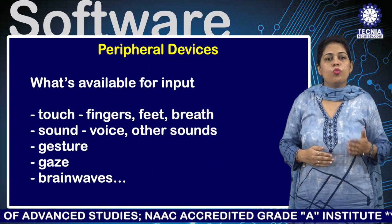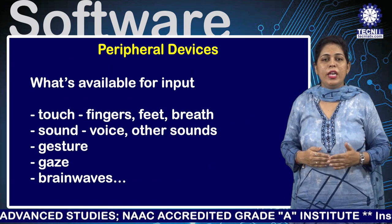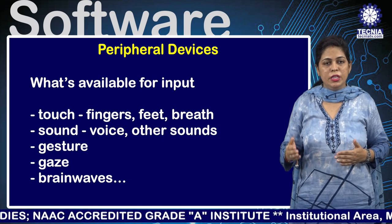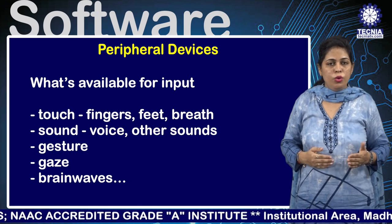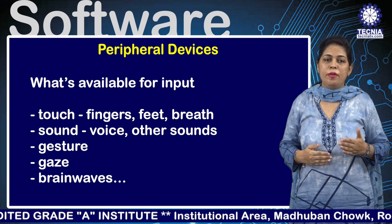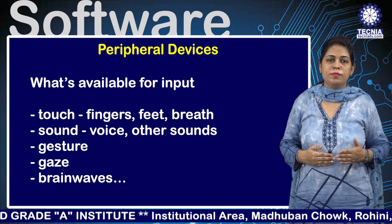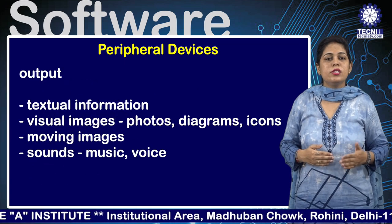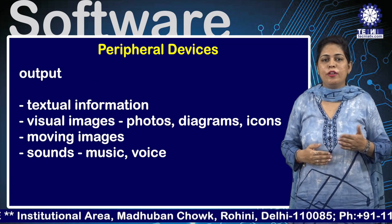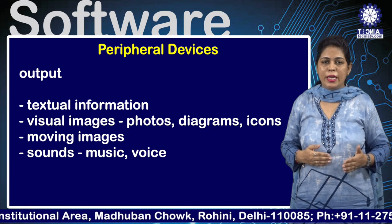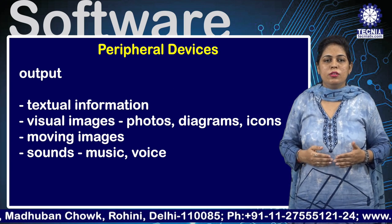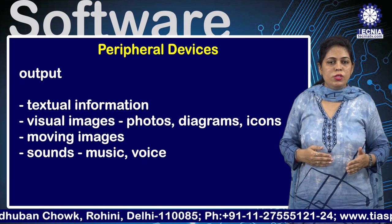What is available for input? Touch — meaning finger, feet, breath; sound, voice and other sounds; gestures; gaze; and brain waves. What is output? Textual information, visual images like photos, diagrams, and icons, moving images, sounds, music, and voice.